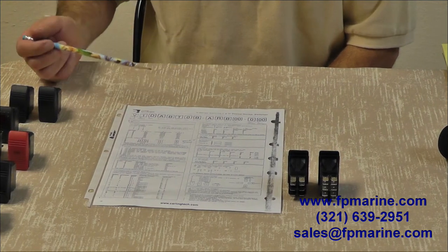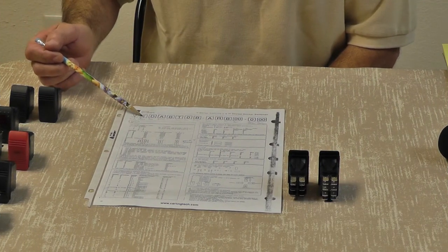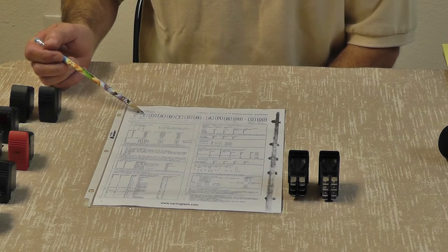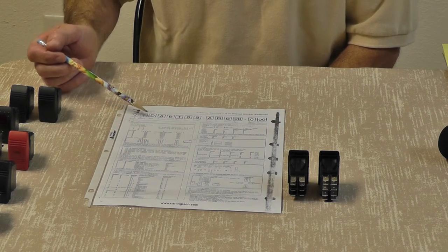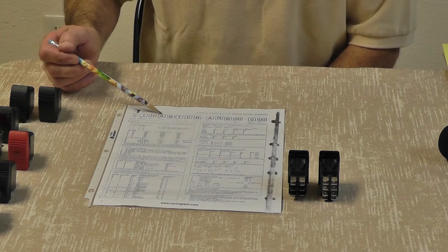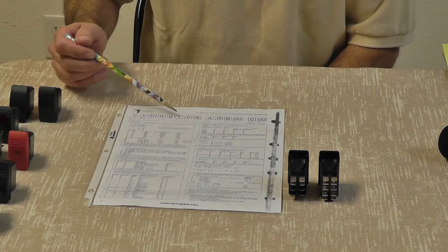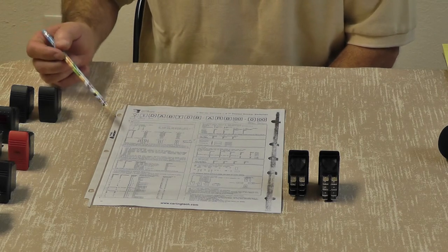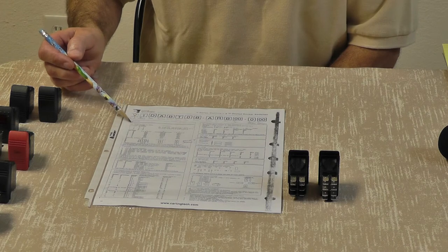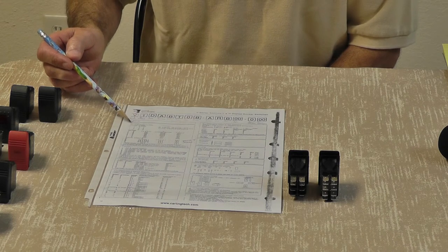Video number two is going to correspond to the second place in the part numbering system. Subsequently, video number three will be the third place, video four will be the fourth place, video five, etc. Today we're going to talk about the second section, which is circuit.